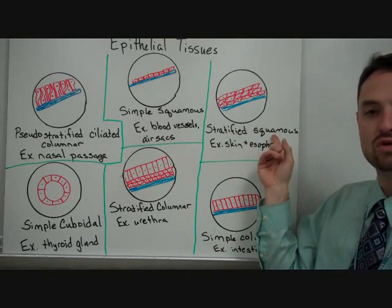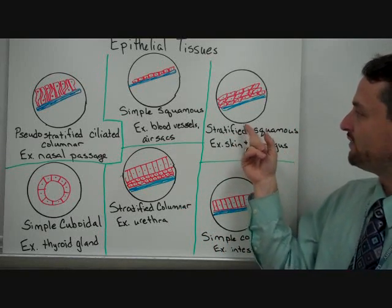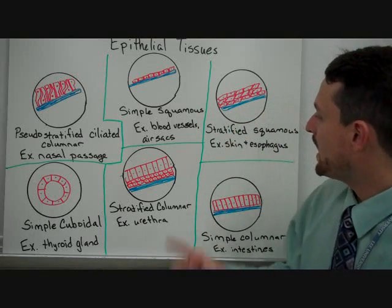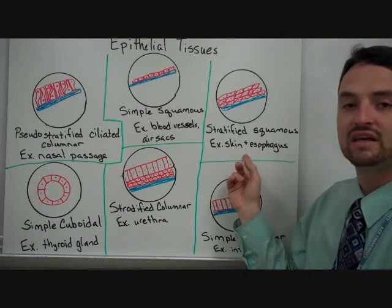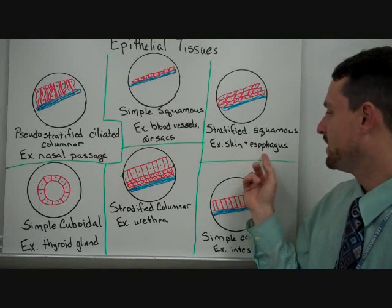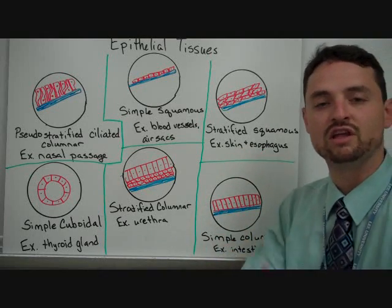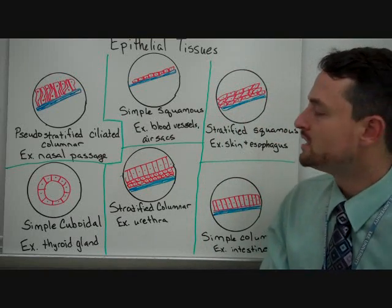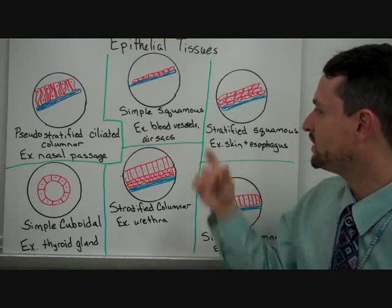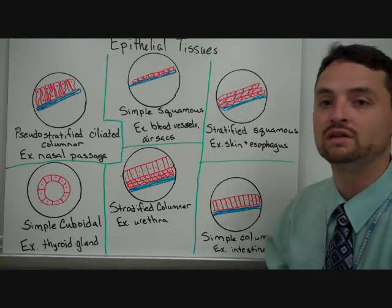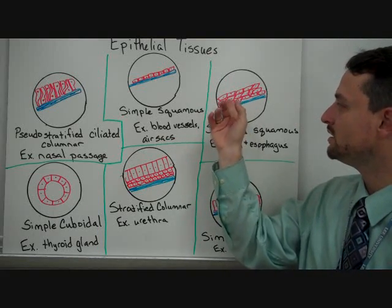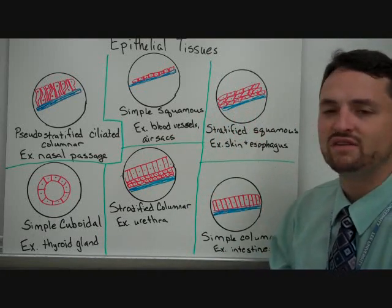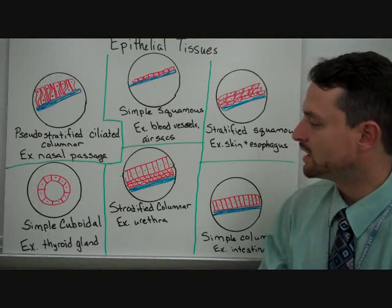Then we've got stratified squamous — stratified meaning several layers, squamous meaning simple. This is like in our skin and our esophagus, areas that are scraped, so there are several layers there to get through. You've got protection there, but it's still not very complex in looking at it.